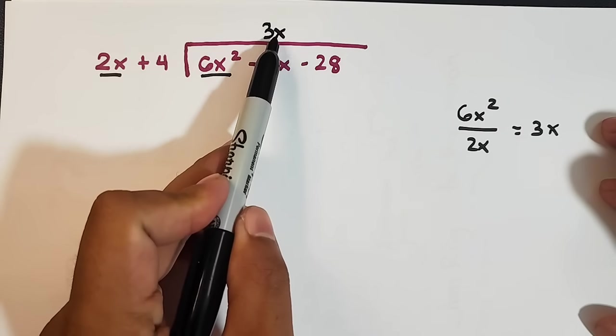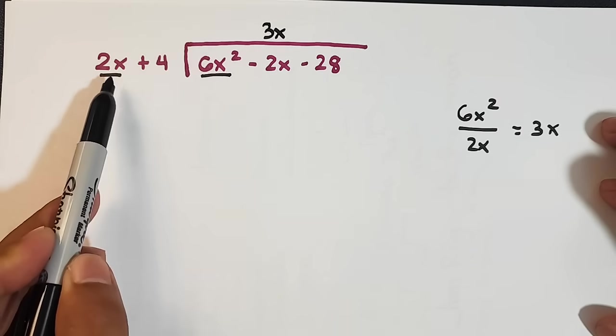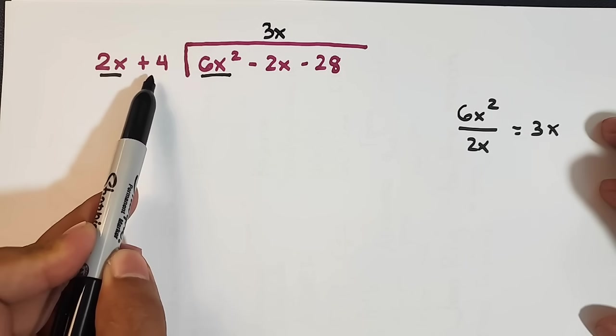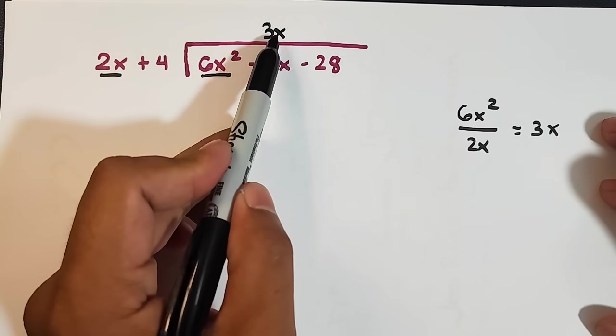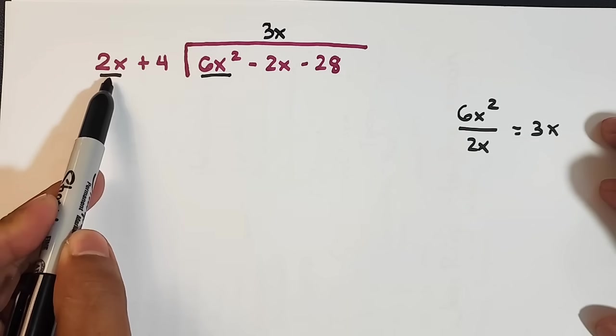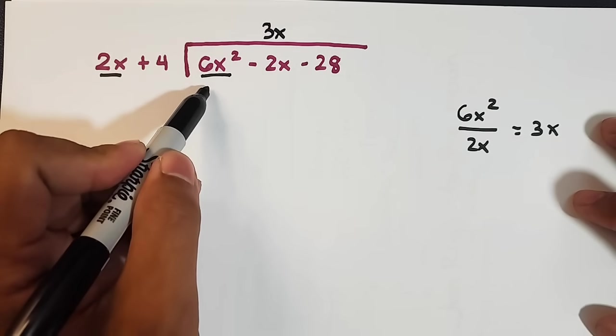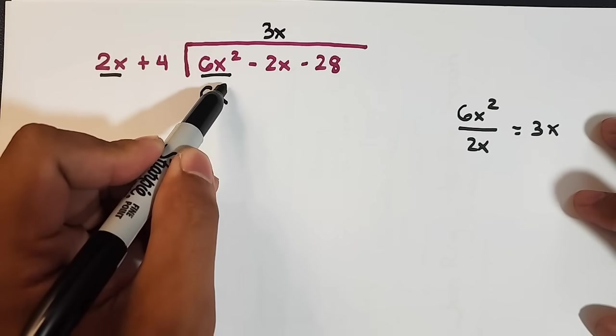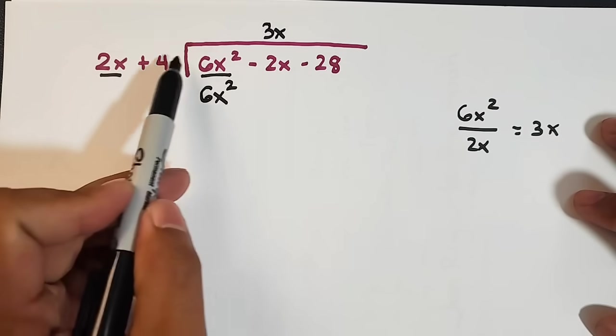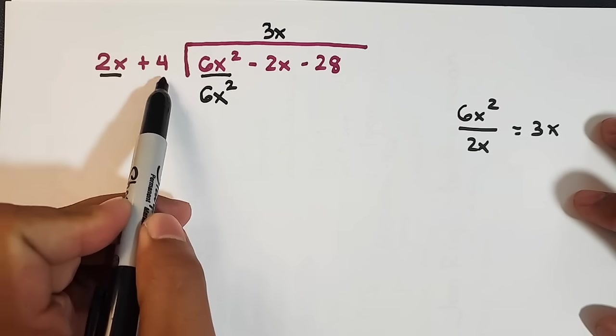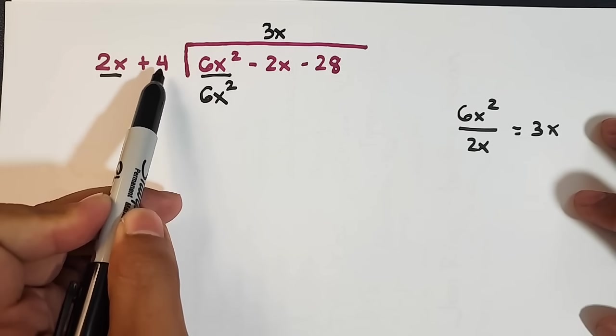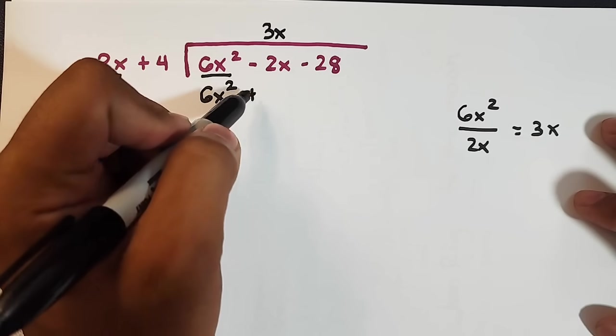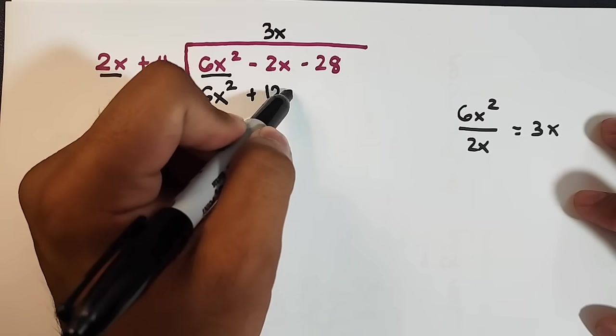Now, this 3x will be distributed or multiplied 1 by 1 by 2x and 4. So what will happen is that we have 3x times 2x that is equal to 6x squared. And this one, after 2x, 4 next. 3x times 4, that is plus 12x.